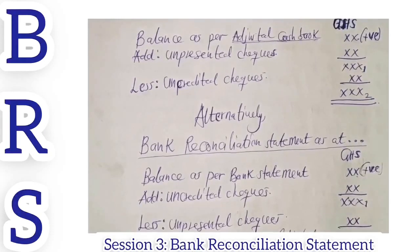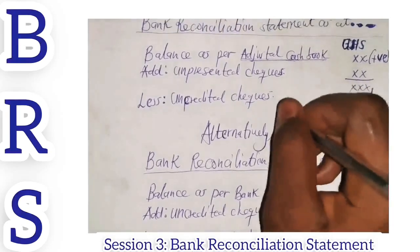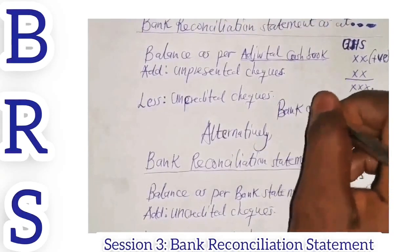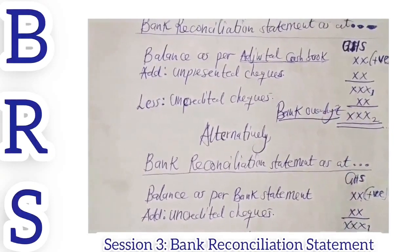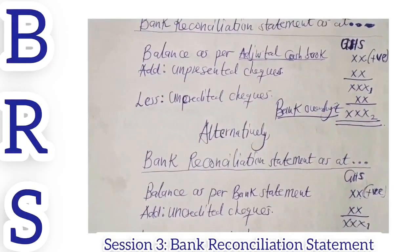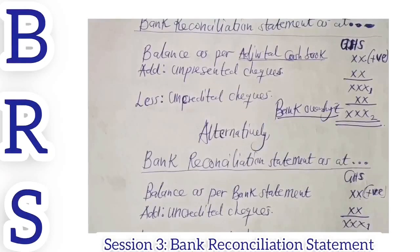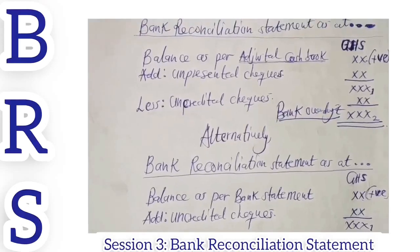Anytime there is a negative balance, that is what we call a bank overdraft. It means that the customer's current account has withdrawn in excess of what is standing in its credit balance. So an overdraft is a facility that allows a customer to withdraw an amount over and above the amount standing in its credit balance at the time the bank statement is issued.